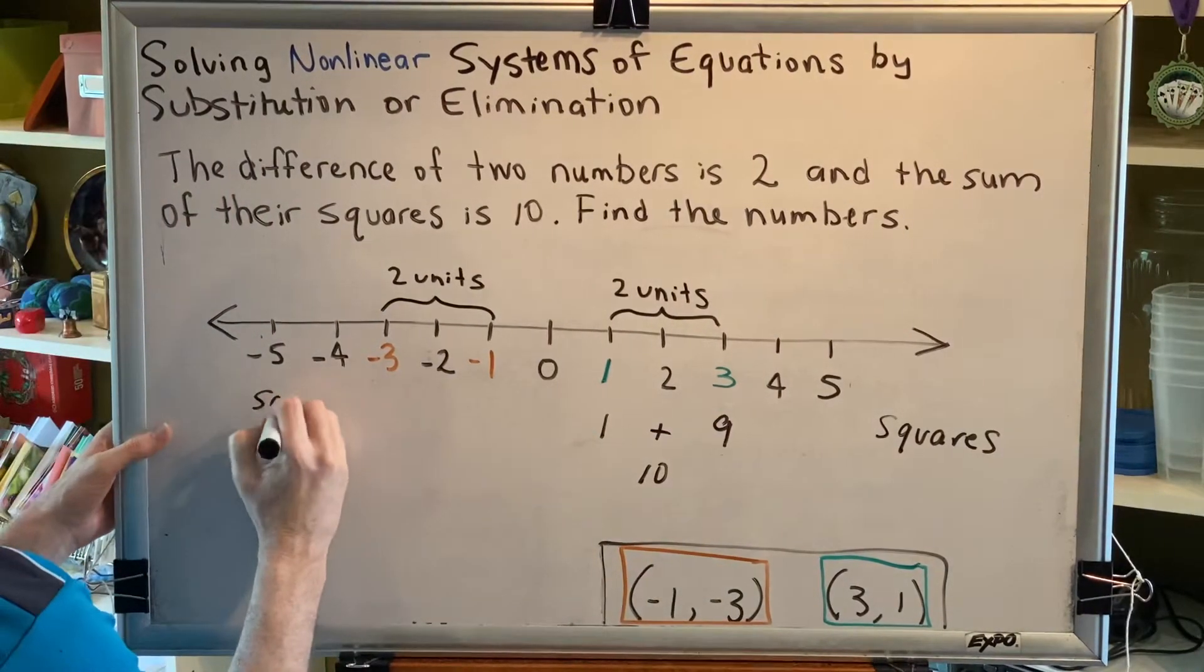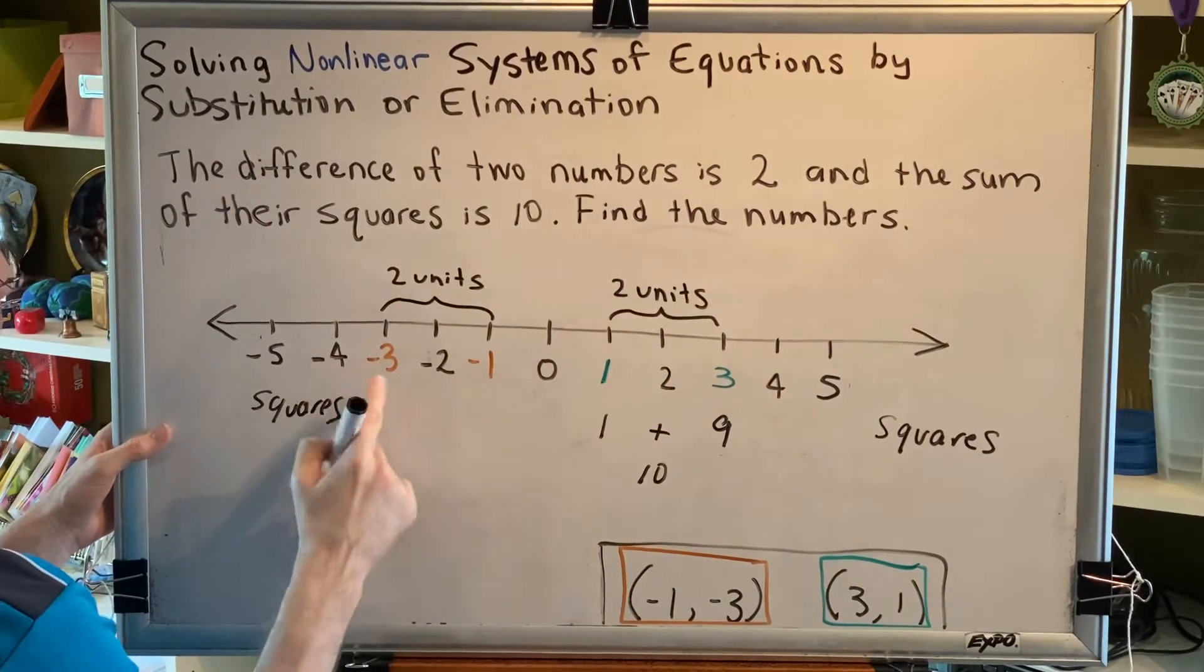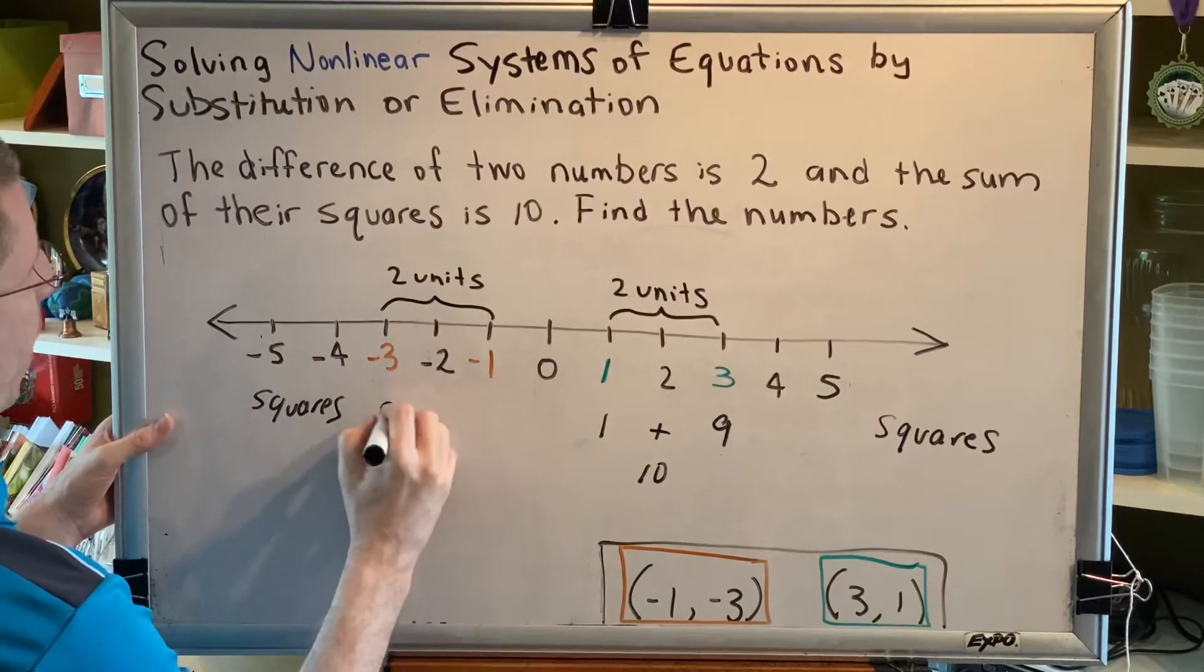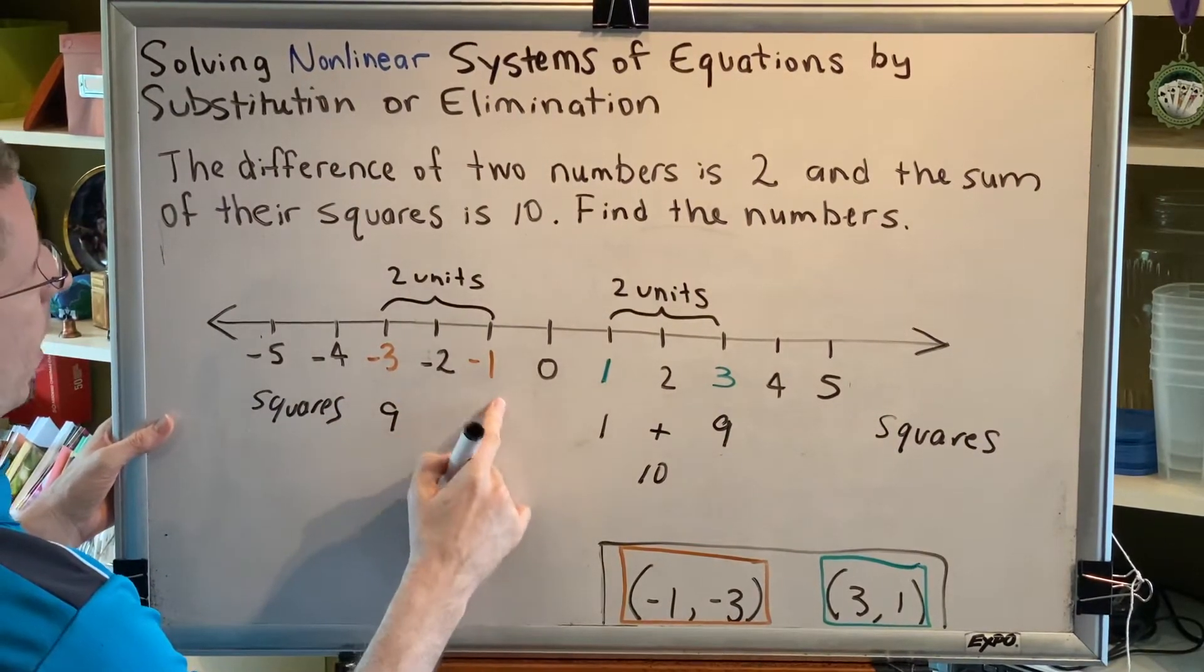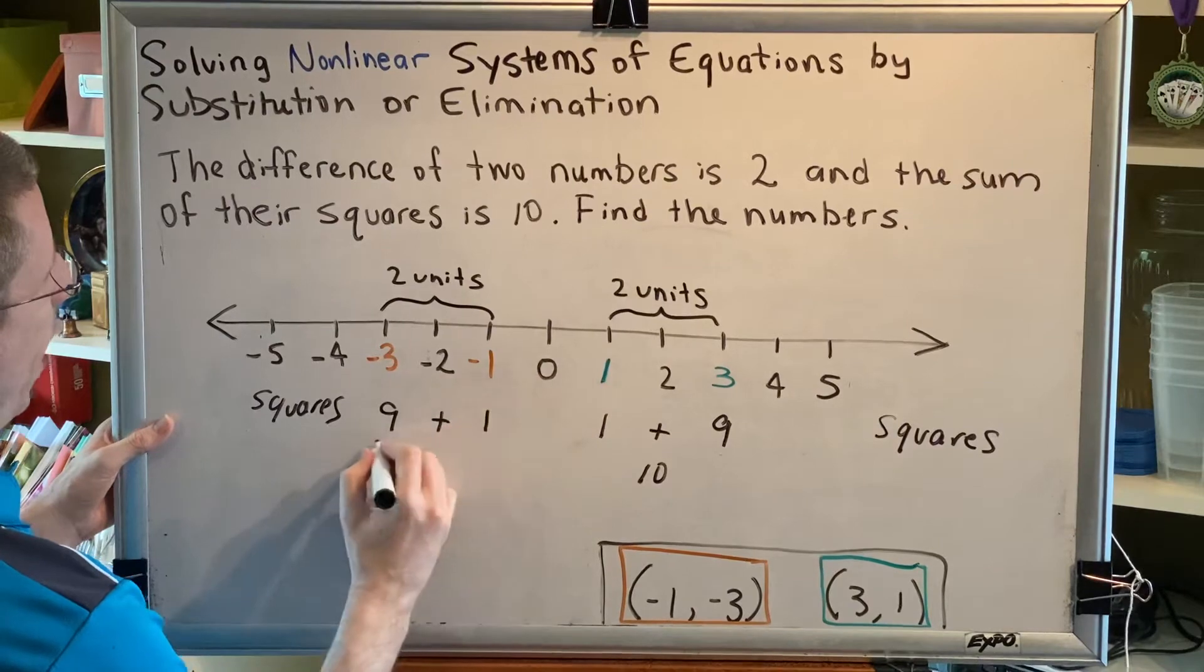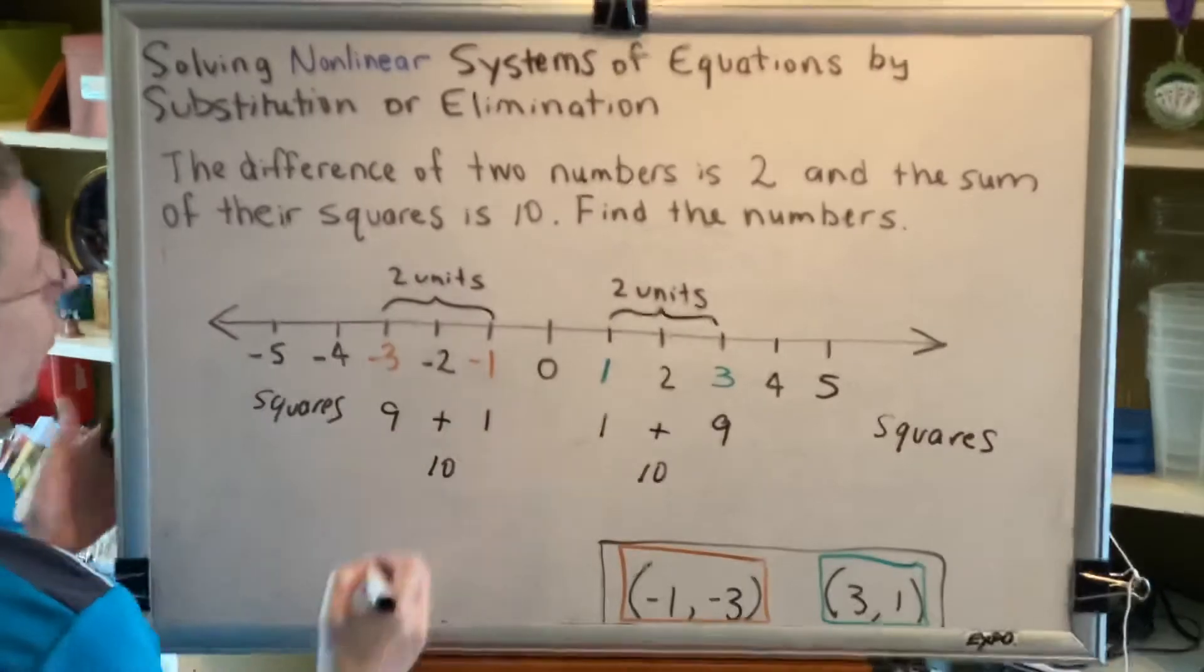Similarly over here, negative 3 times itself is positive 9. Negative 1 times itself is positive 1. And since it says sum, we add them together and we get 10.